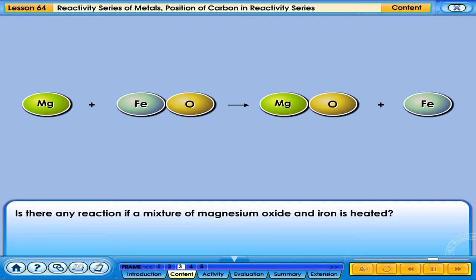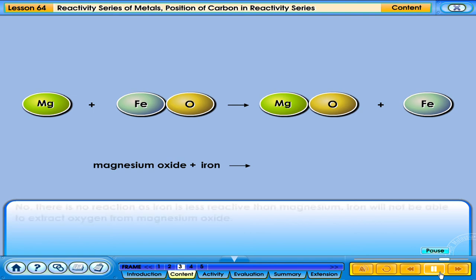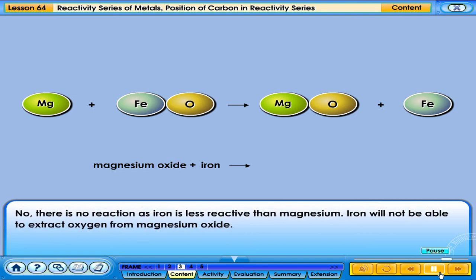Is there any reaction if a mixture of magnesium oxide and iron is heated? No, there is no reaction as iron is less reactive than magnesium. Iron will not be able to extract oxygen from magnesium oxide.